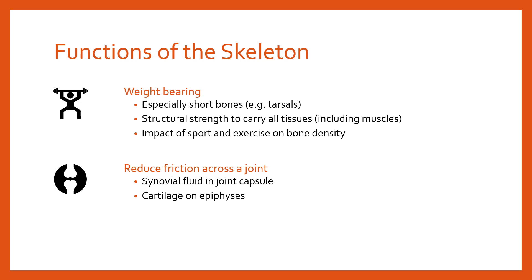Synovial fluid in the joint capsule and cartilage on the epiphyses help to reduce the friction buildup and heat that gets built up as a result of friction, preventing contact between bones from wearing them away and causing long-term damage. Sesamoid bones such as the patella, or kneecap, also help to reduce friction across the joint by lifting tendons up and away from contact with the joint proper.